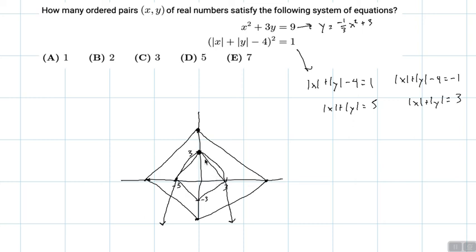The number of solutions is simply where the parabola intersects both of these graphs. It hits at five distinct points. So the number of ordered pairs of real numbers that satisfy the system of equations is five ordered pairs, and the answer is choice D.